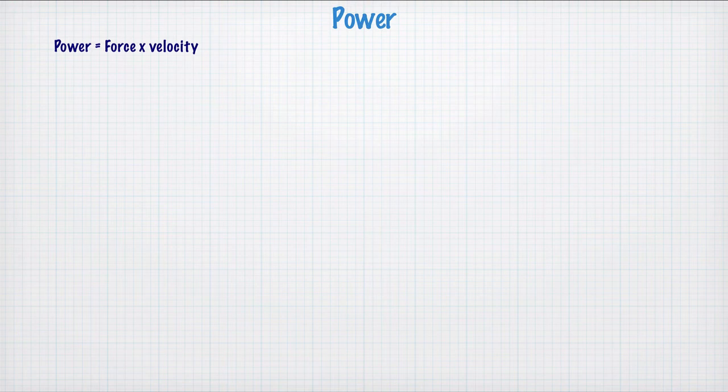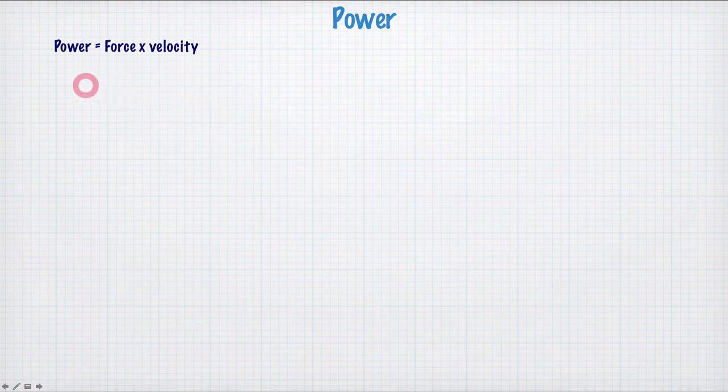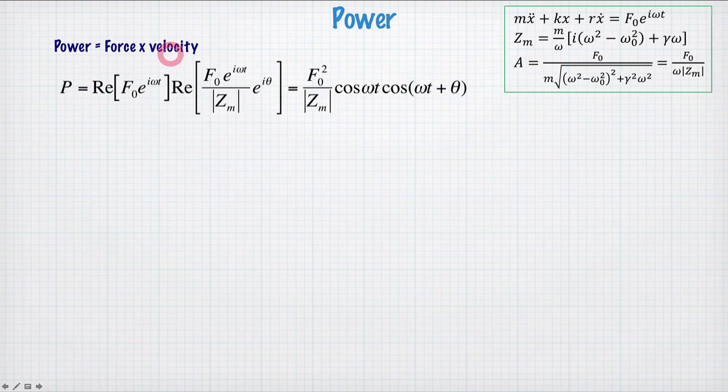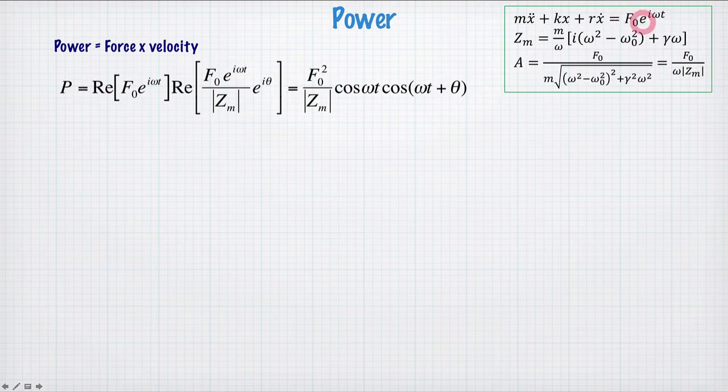Let's now consider the power dissipated by an oscillator, so that is the power used to drive it in steady state. The power is given by force times velocity. So when the expression for the force applied to the oscillator, that's just the driving force. From our equation of motion we have this driving force here, so we take the real part of this, and that's our driving force.